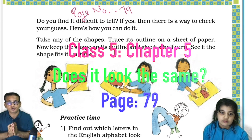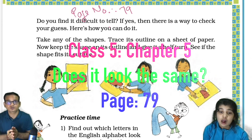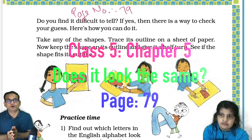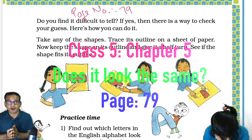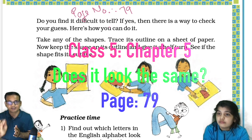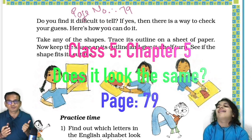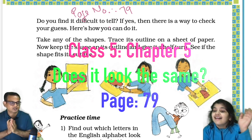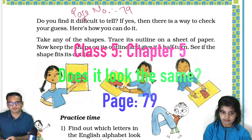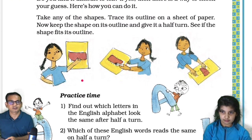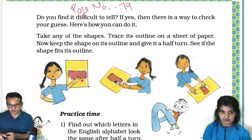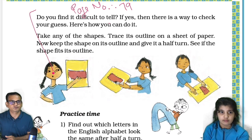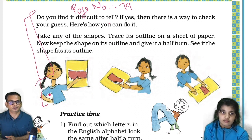Welcome back to this channel. The purpose of this video and channel is only for those students who cannot afford tuitions. Today we'll be studying page number 79 of class 5th, chapter 5: 'Does it look the same?' from the NCERT book. Here with me is Avisha Rathod. Shall we start? Yes, without wasting further time. In the last video we explained this portion already, so today we'll be studying practice time.